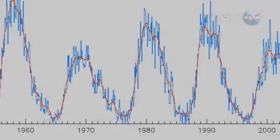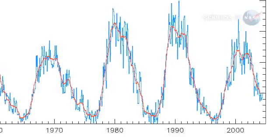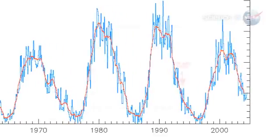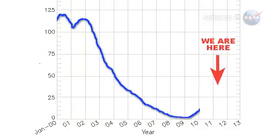Quiet spells on the Sun are nothing new. They come along every 11 years or so. It's a natural part of the solar cycle. This particular solar minimum, however, was lasting longer than usual, prompting some researchers to wonder if it would ever end. Now the pot is starting to boil.